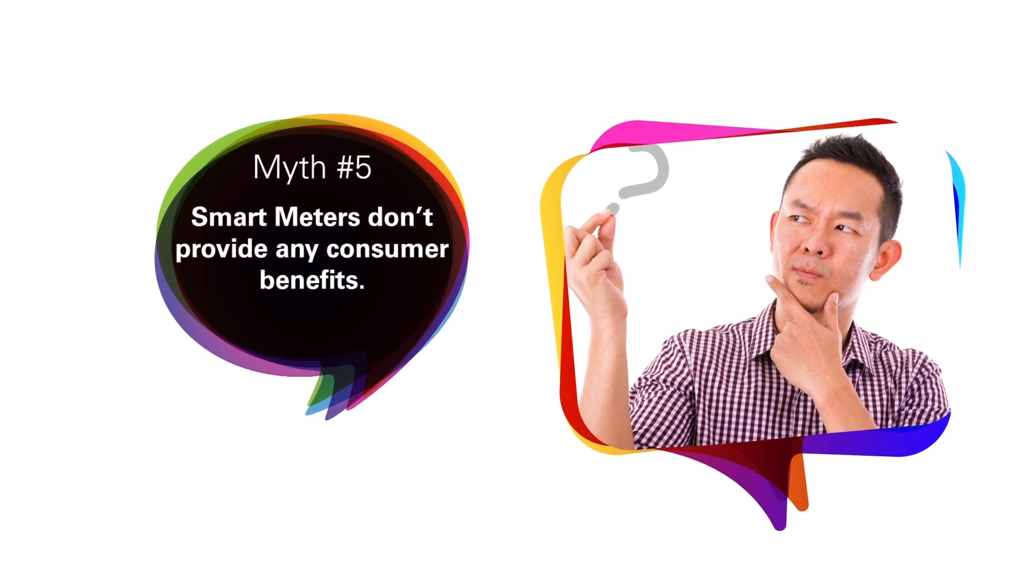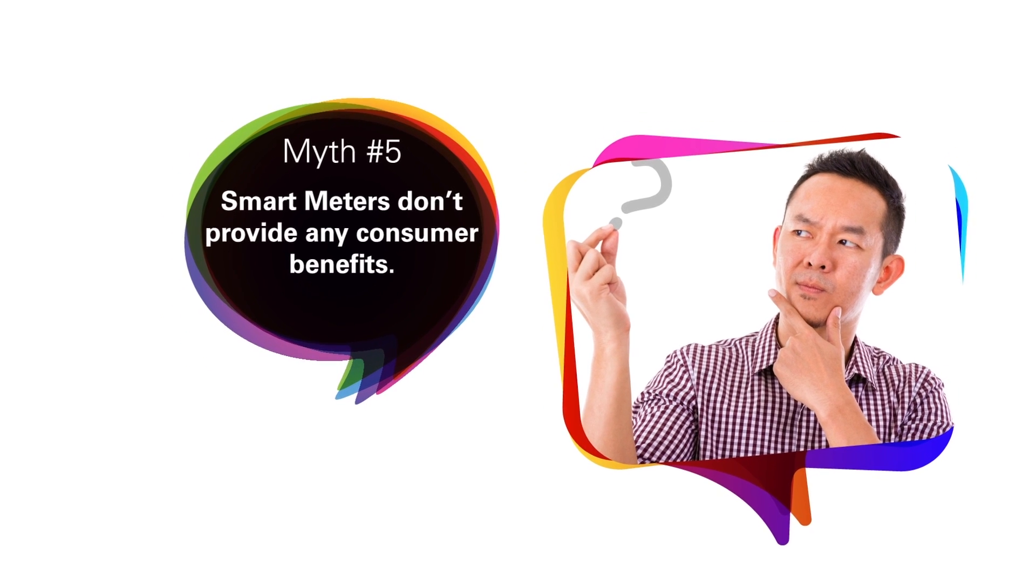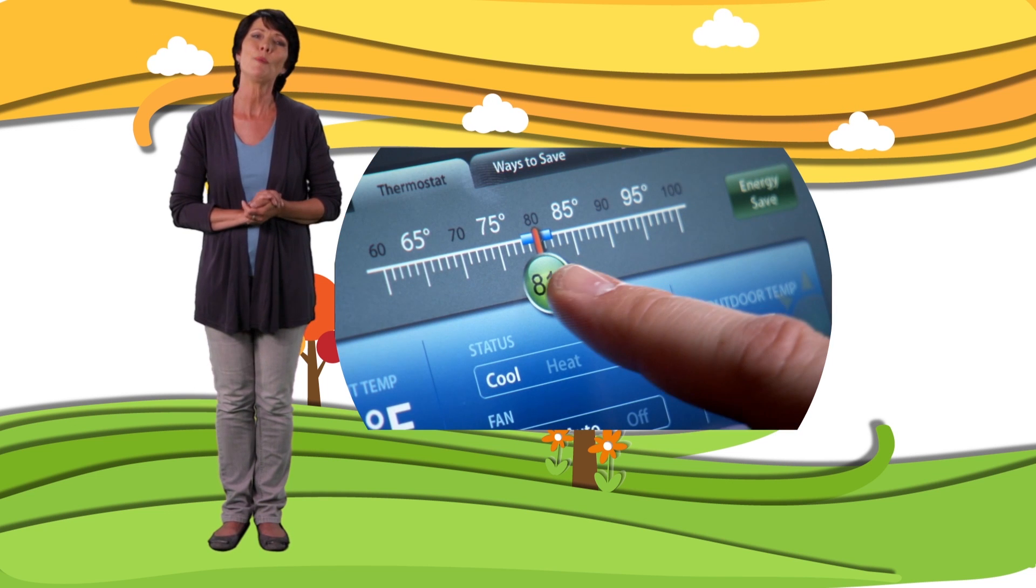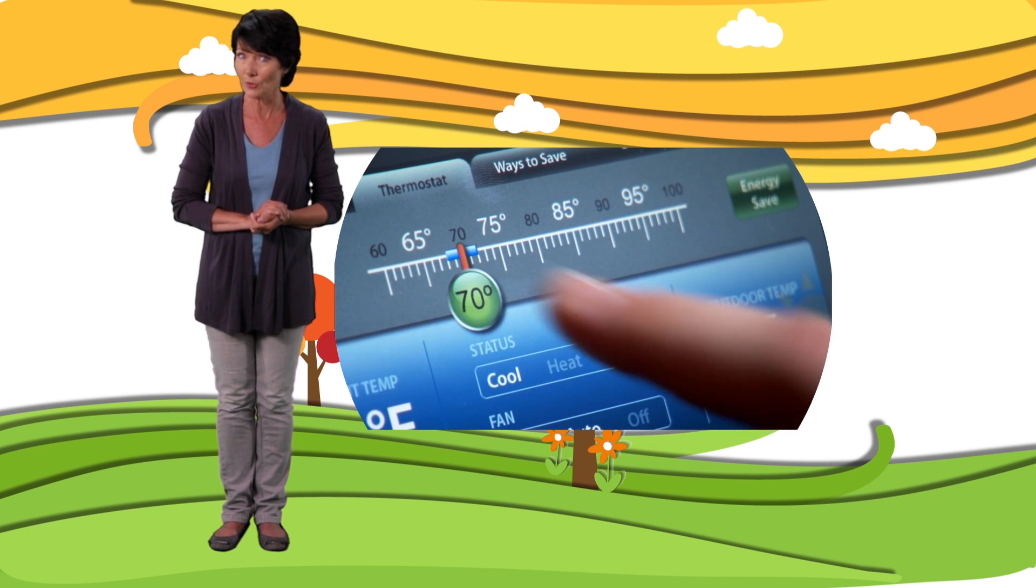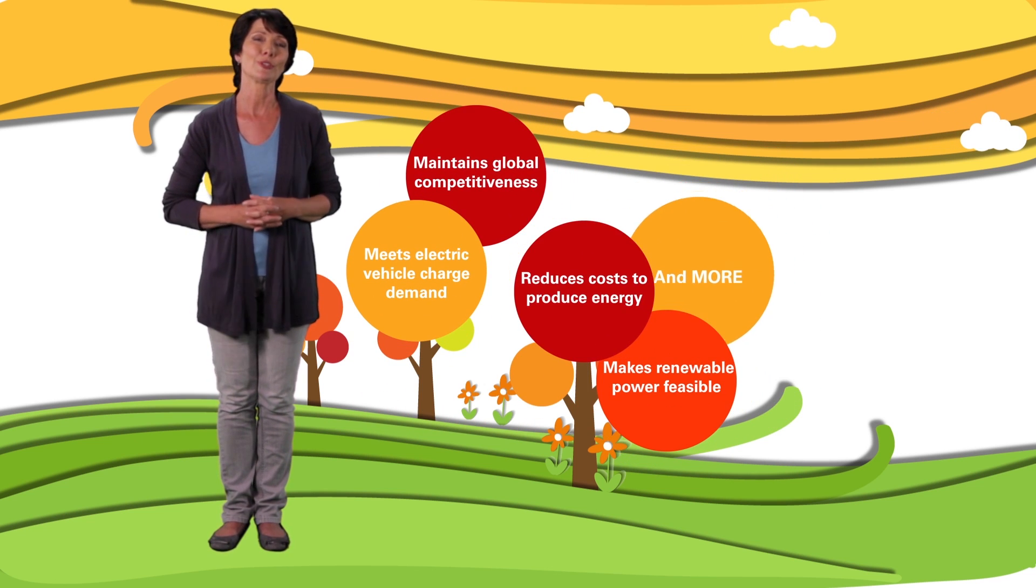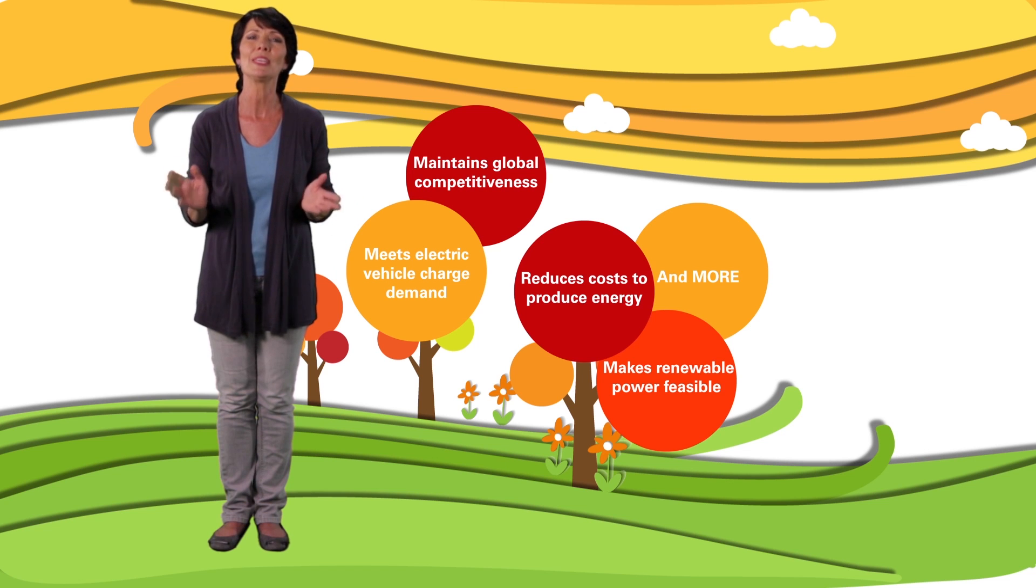Myth number five, smart meters don't provide any consumer benefits. Fact, smart meters help you control how much energy you use and how much you pay for it. Plus they provide better protection against outages and overloads. And that's just the tip of the iceberg. There are even more great things that smart meters can enable.